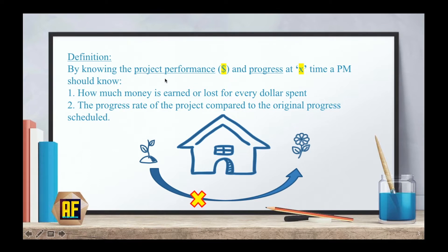By knowing the project performance and progress at a given time, a project manager should know how much money is earned or lost for every dollar spent, and the progress rate of the project compared to the original progress schedule. So imagine that you're building a house — you pick a random day, stop the project, and by knowing how much you've performed and progressed at that time, you will be able to know: are we making money? Are we losing money? Are we ahead of schedule? Are we behind schedule?